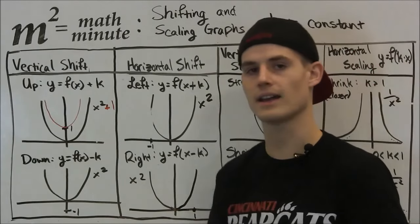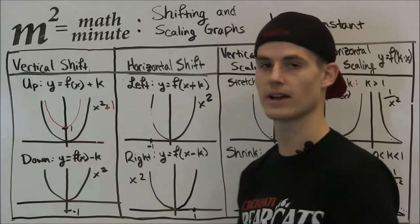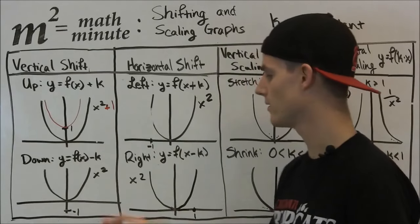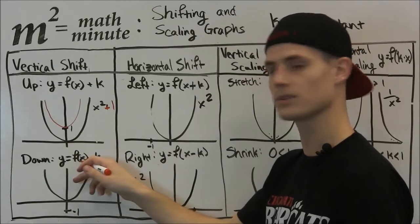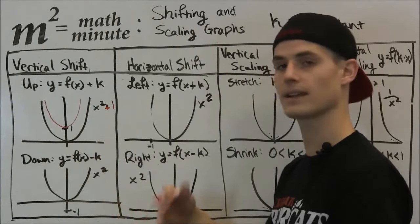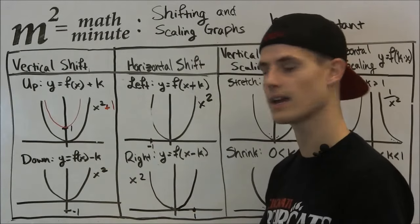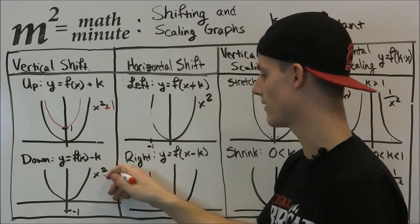Now if you can kind of guess, if we were to subtract that k value, we would probably shift it down. So now, if we have a function minus some constant k, we're going to shift it down k units. So in this case, we're going to have minus 1.